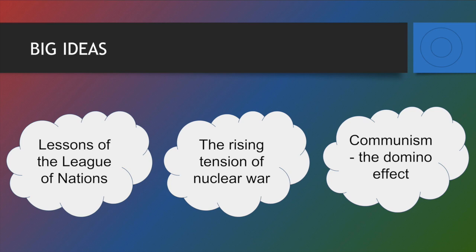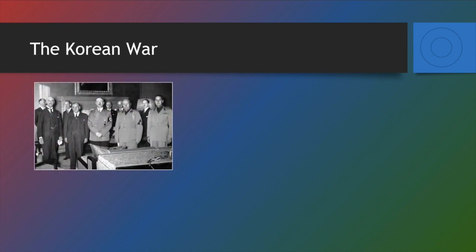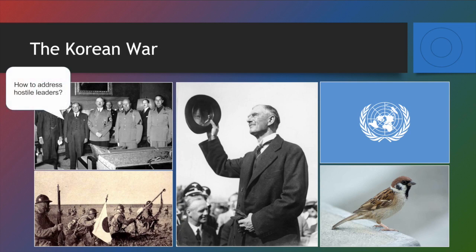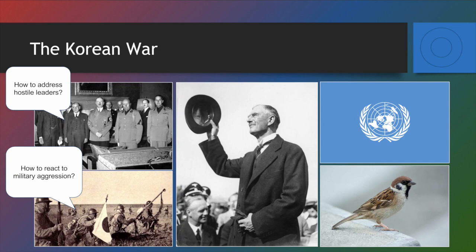And then finally, with Vietnam, communism through the lens of the domino effect — we'll have a brief discussion about what that means. With the Korean War, I like to put up a series of photographs to get your mind thinking about the issue we need to focus on. One of those photographs relates to how to address hostile leaders following World War II. Many people saw that Hitler, Mussolini, and other hostile leaders could have been stopped earlier, but the world stage decided to ignore them. So how would the Korean War be different? Our second photograph you may recognize as the invasion of Manchuria in the 1930s — how are we going to react to military aggression?